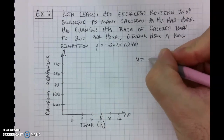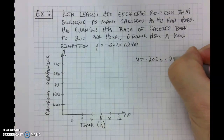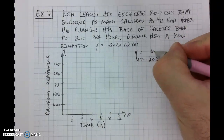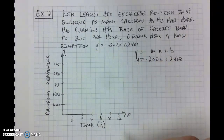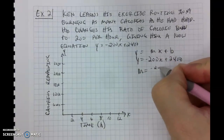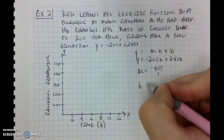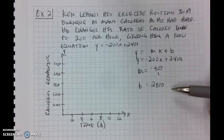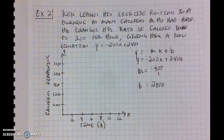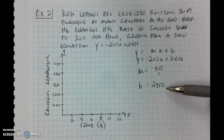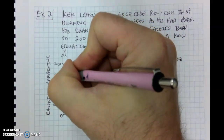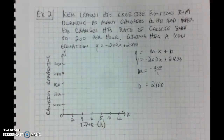He still wants to burn 2,400 calories per week, so he changes his equation to y equals negative 200x plus 2,400. We're still going to identify our slope and our y-intercept. We have y equals negative 200x plus 2,400. Writing y equals mx plus b, we recognize that m is equal to negative 200 over 1, and b is still equal to 2,400. We start with our y-intercept and plot that point first, then do our slope from there.